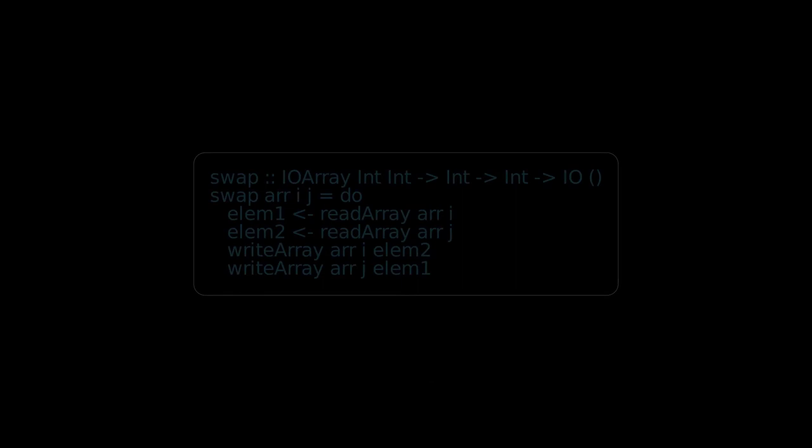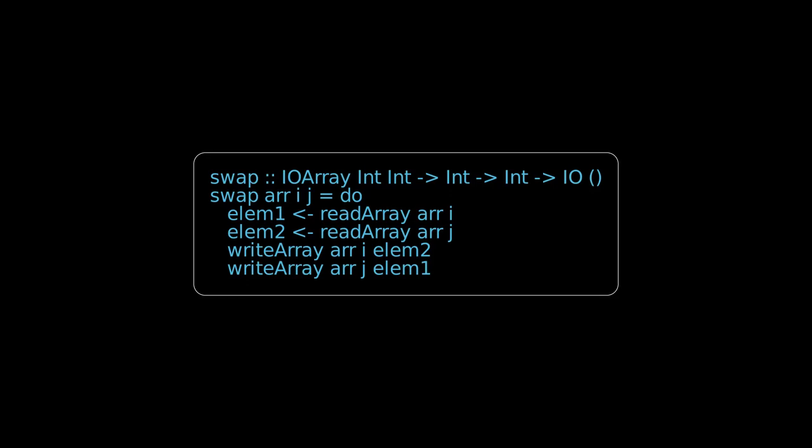With these tools at our disposal, we can start writing quick sort in Haskell. We'll follow the structure of our Python implementation. The first function we'll implement is swap. This is where the main mutation action actually takes place. Within the IO monad, we can take our input array, read the existing values at the given indices, and then write those values out in a swapped fashion so that the I value goes to J and the J value goes to I.